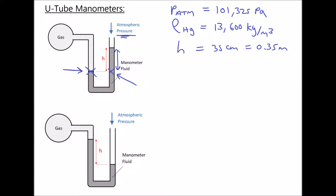We're going to discuss two different types of pressure. We're going to discuss absolute pressure, which is the true value of the pressure of the gas. And we're going to discuss something called gauge pressure, which uses our atmospheric pressure as a datum. Now if we wanted to determine the absolute pressure of that gas...